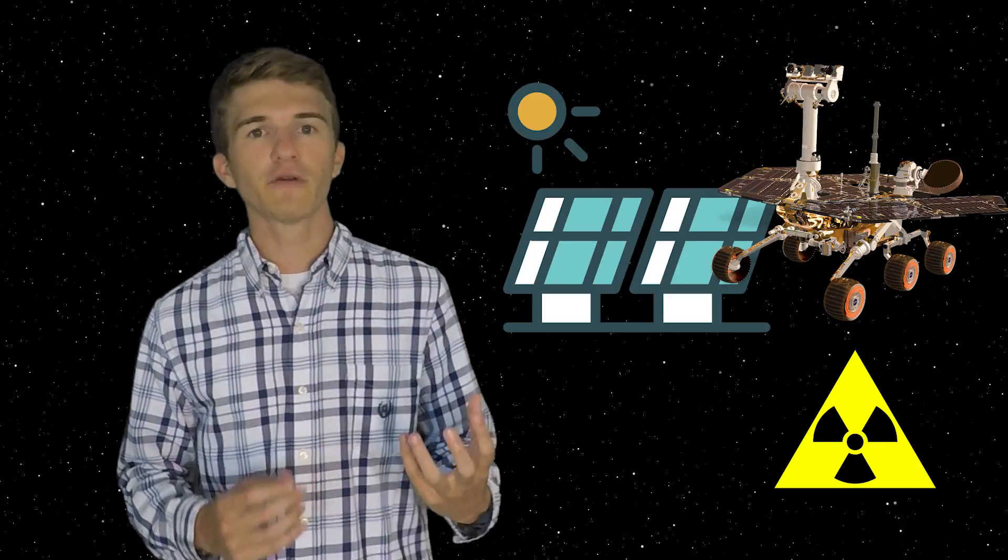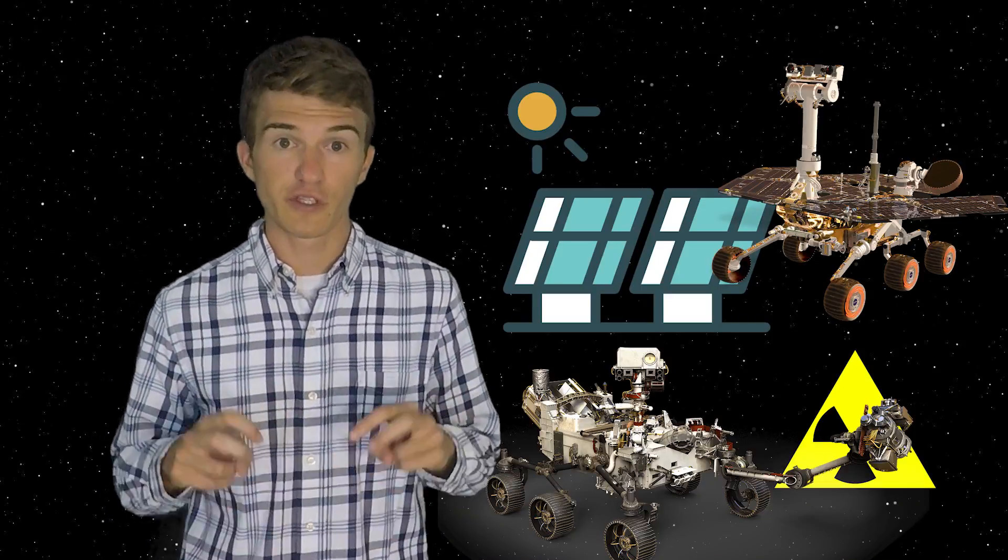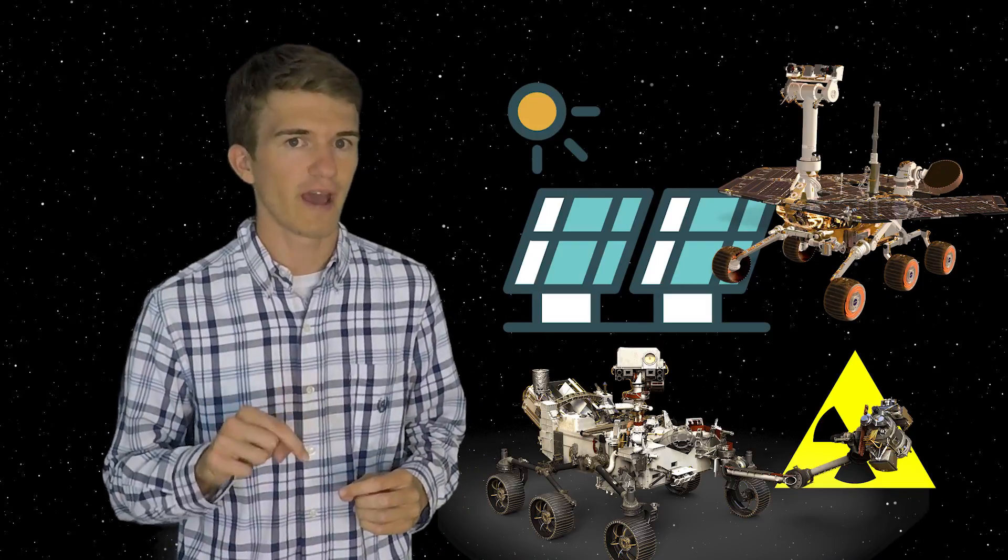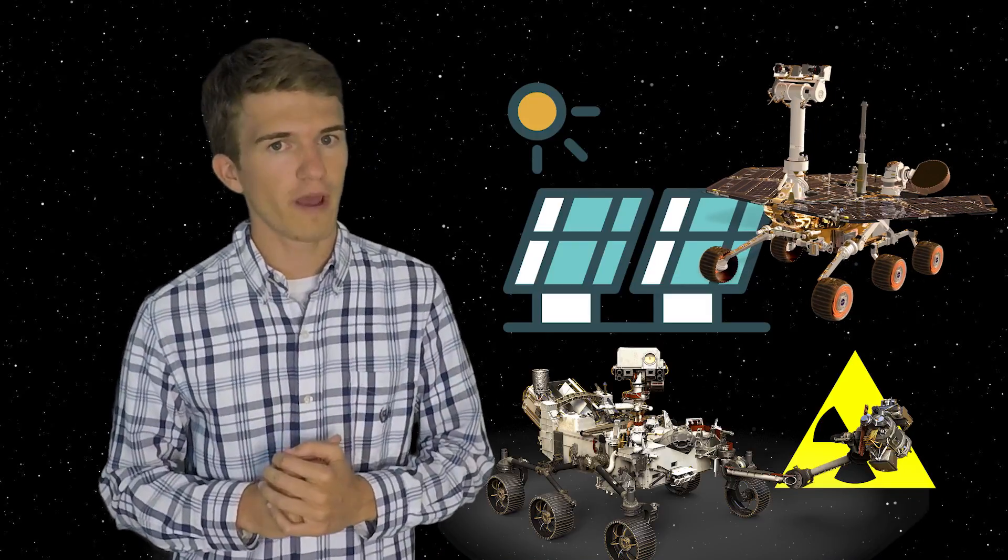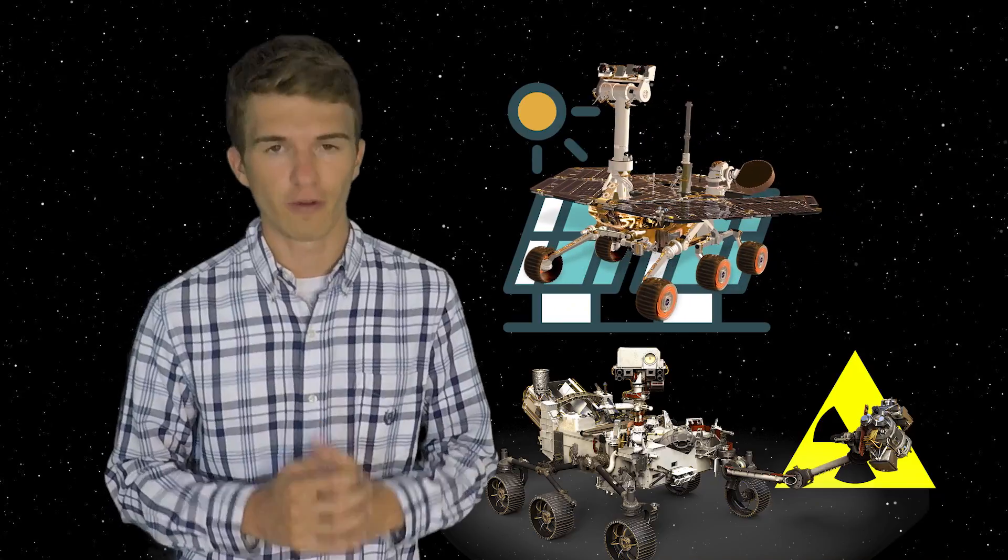So this leaves us with solar and nuclear energy, and these two are the most talked about energy sources when we discuss Mars. For example, the Opportunity and Curiosity rovers, which are the two functioning rovers on Mars right now. One of which is powered by solar panels. The other one is powered by nuclear energy.